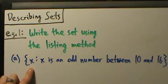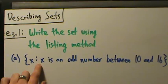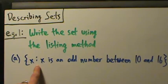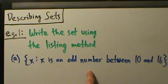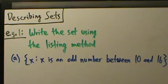So here, this is the set of all x such that – remember, such that could be a vertical bar or colon – x such that x is an odd number between 10 and 16. Okay, what we think about, what are the odd numbers between 10 and 16?